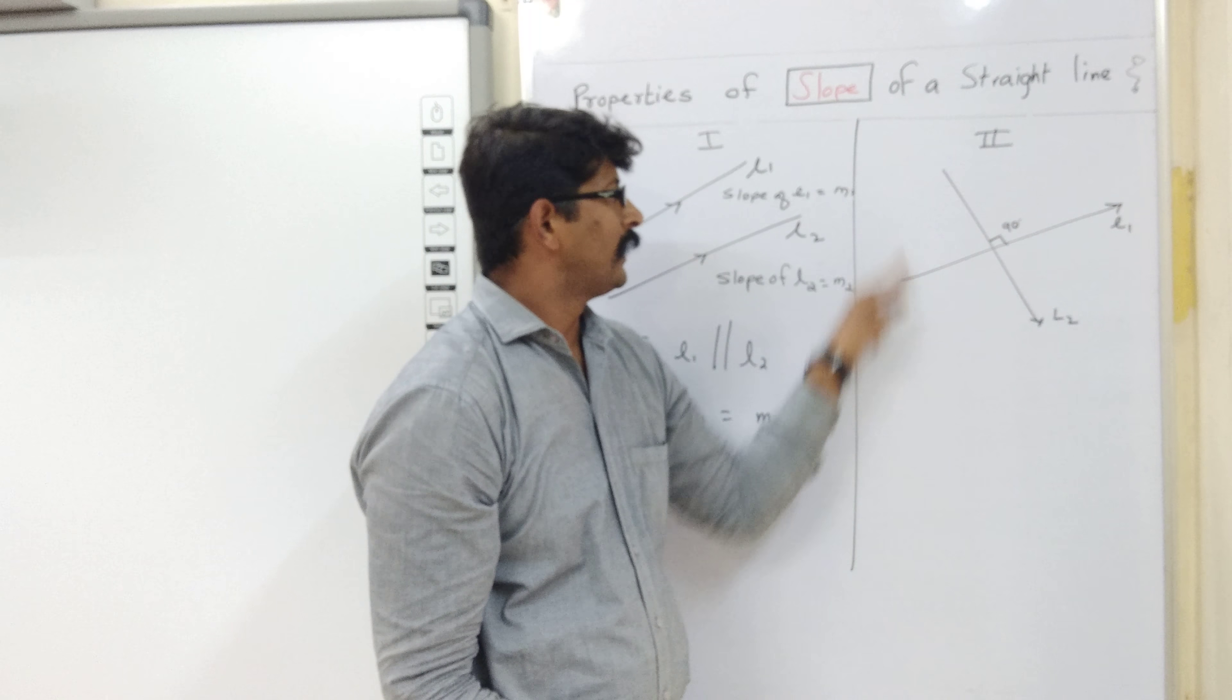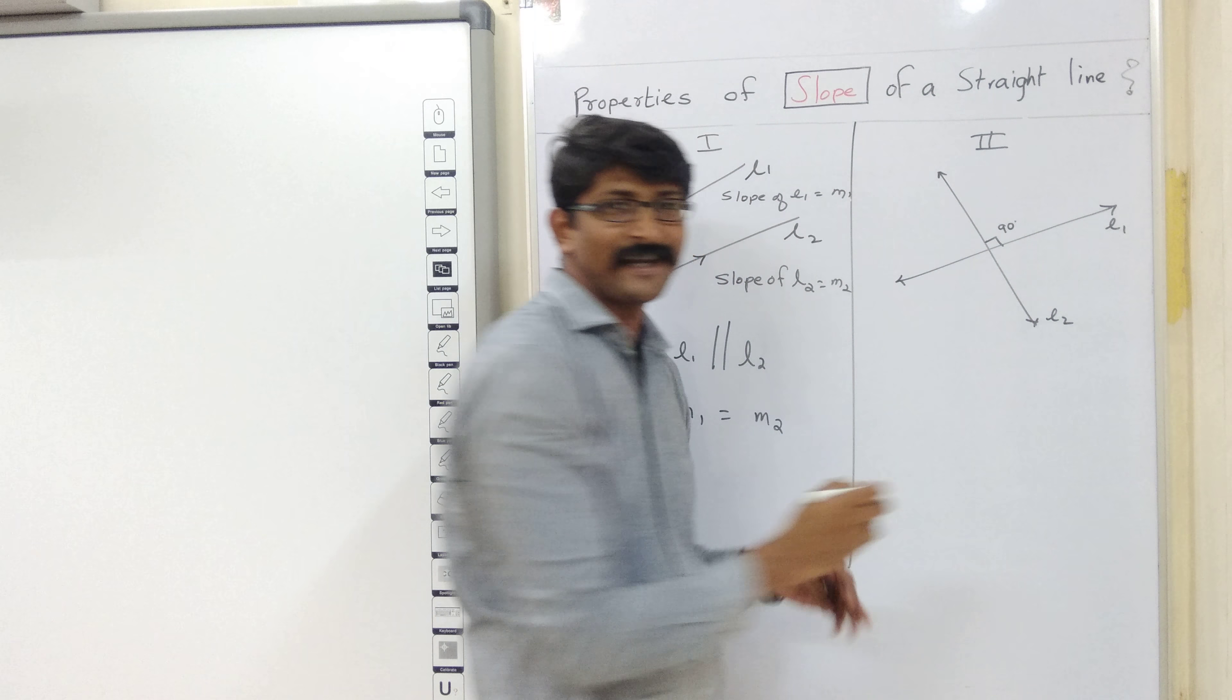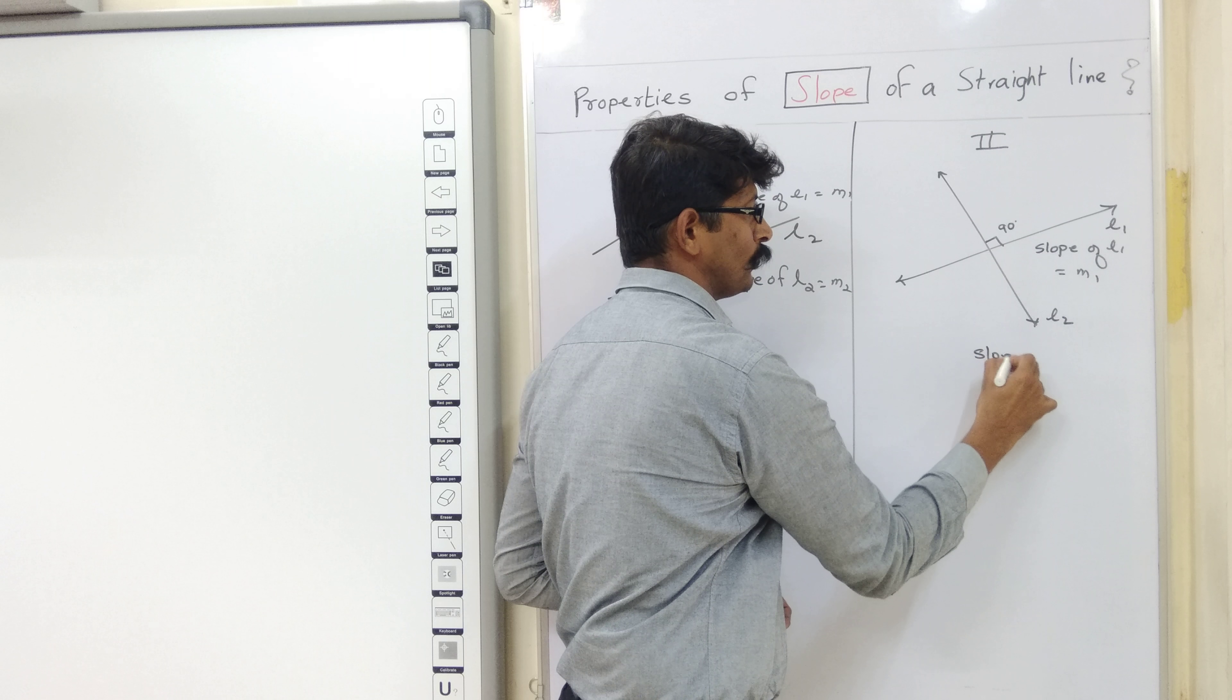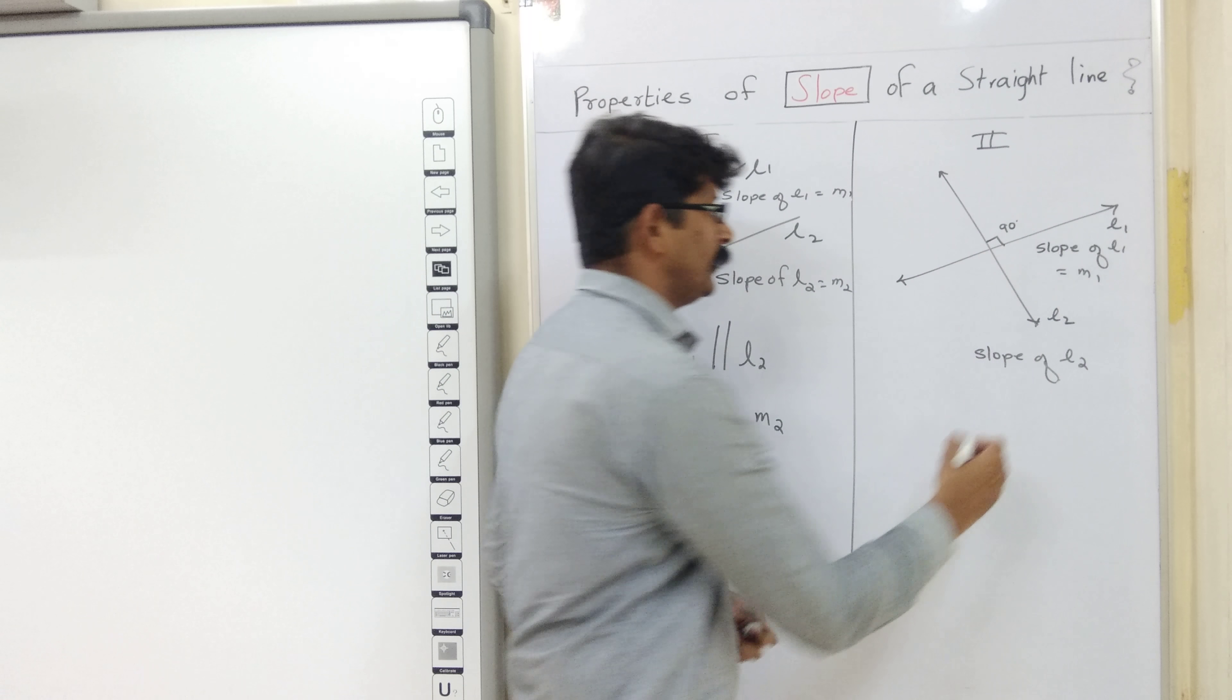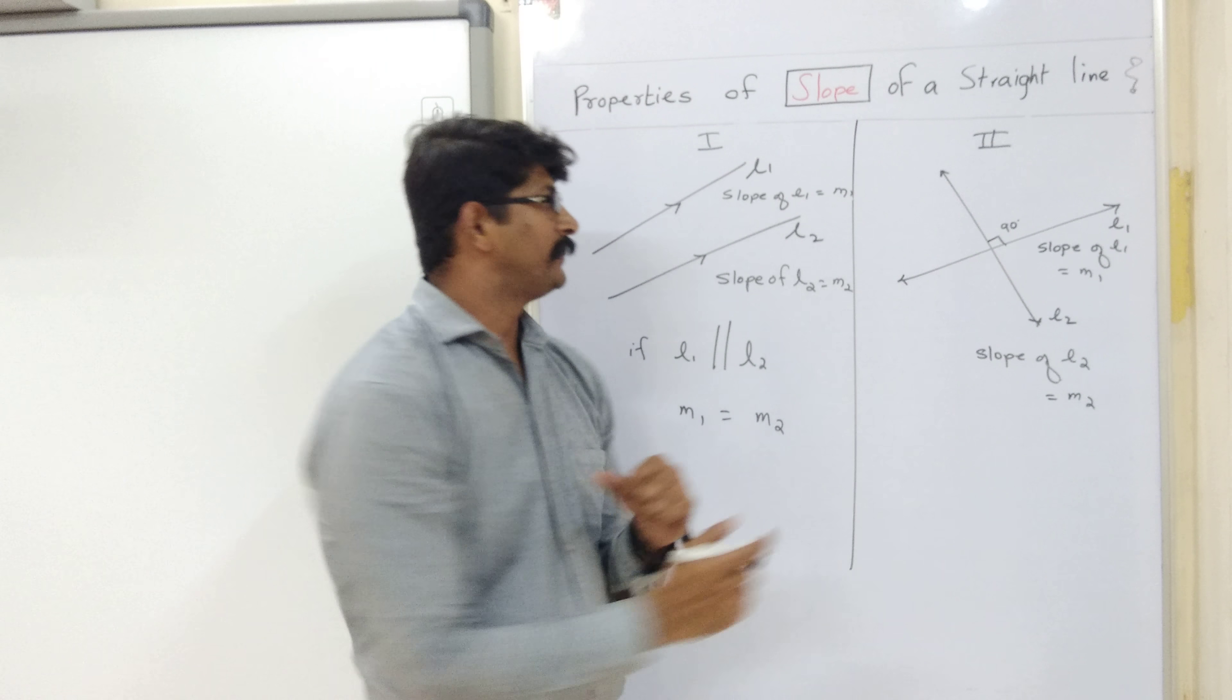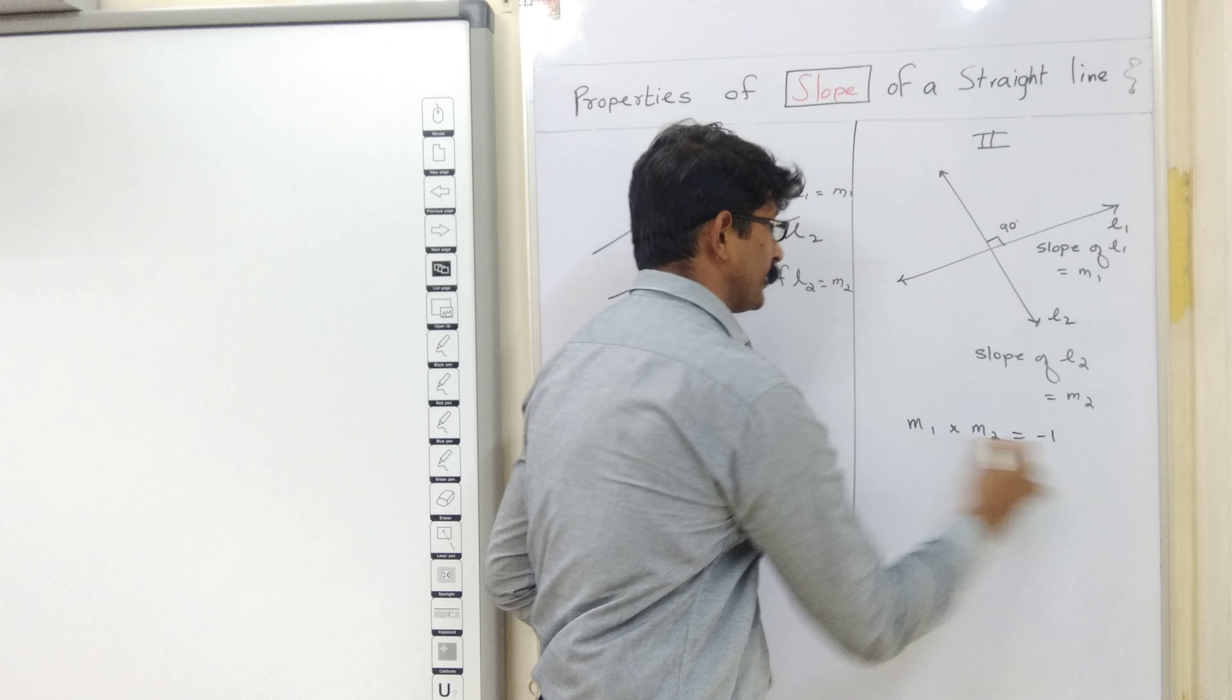So, l1 represents line 1 and l2 represents line 2. And let's say the slope of line l1 is m1. Again, slope of l1 is m1 and slope of line 2, slope of line 2 is let's say m2. The property says if two lines are perpendicular, then their product of the slopes is equal to minus 1.